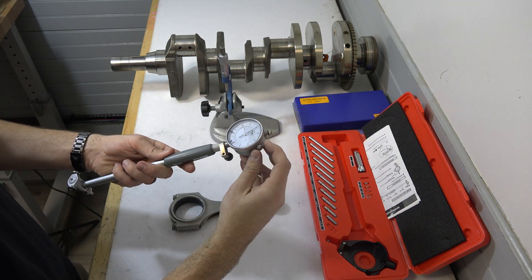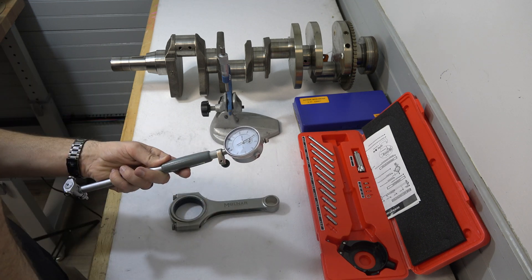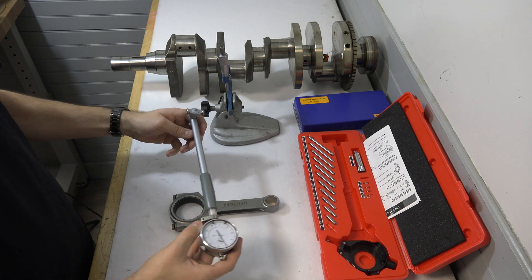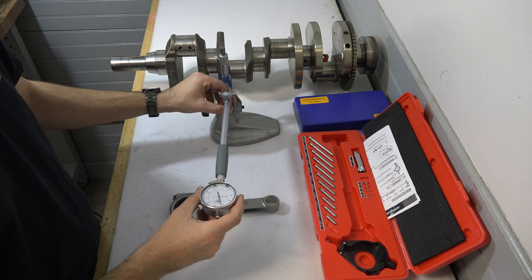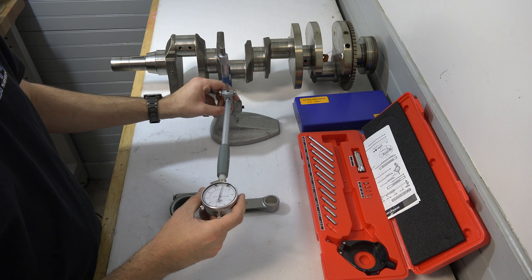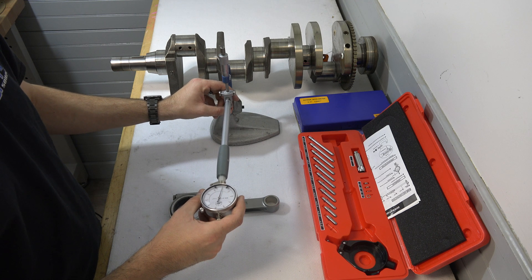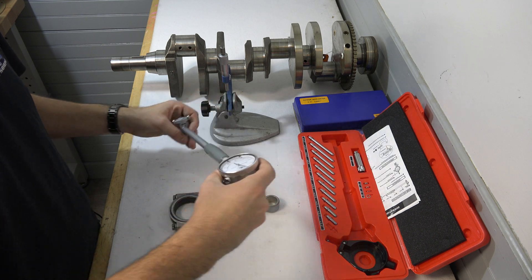Now we're going to take this and lock the dial down so it doesn't rotate on us. And what you always want to do is always double check it just one more time. And again, we're going to work that dial indicator up and down and left and right. Okay, looks good.